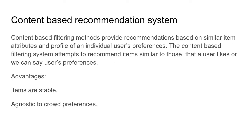This recommendation system falls under the category of content-based recommendation systems, also called memory-based recommendation systems. Content-based filtering methods provide recommendations based on similar item attributes and the profile of an individual user's preferences. The content-based filtering system attempts to recommend items similar to those that a user likes or prefers.